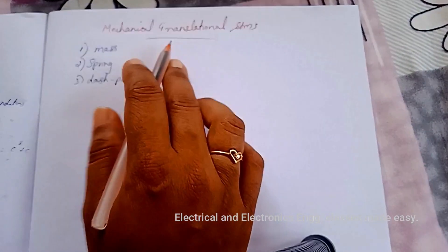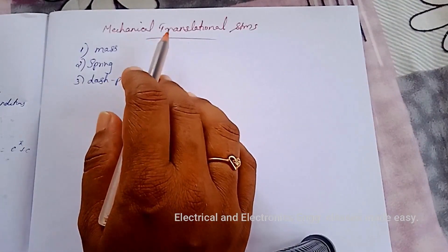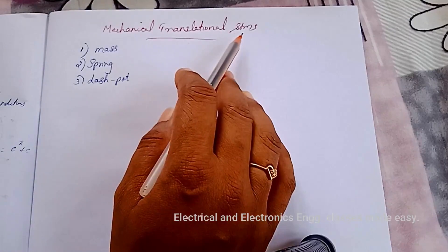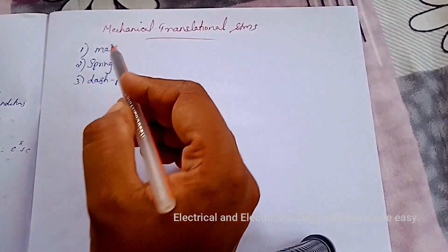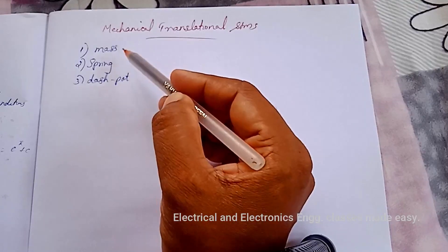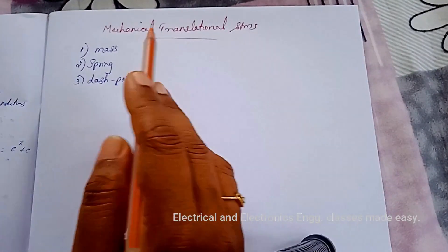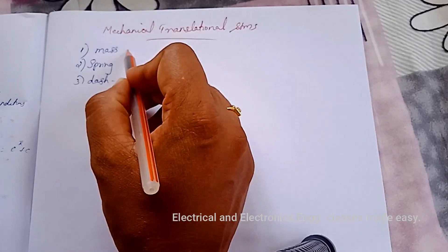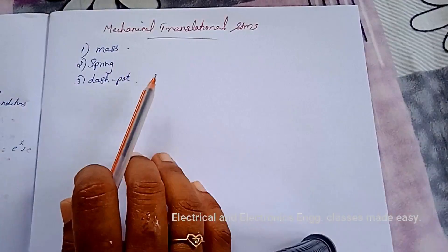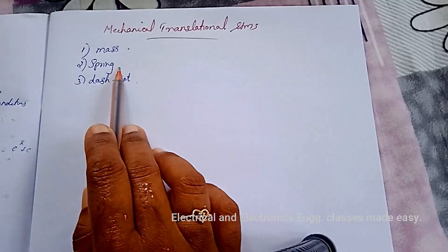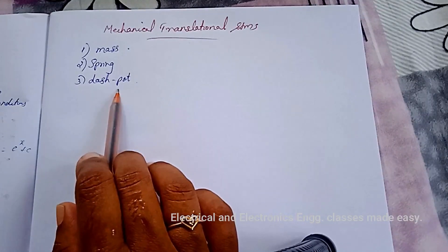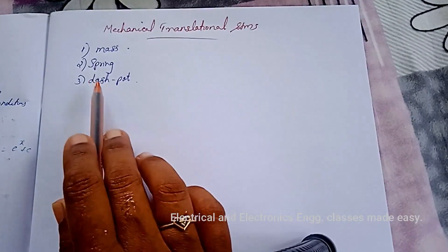Welcome to today's class about mechanical translational systems. The model of mechanical translational systems can be obtained by using three basic elements: mass, spring, and dashpot. The weight of the mechanical system is represented by the element mass, assumed to be concentrated at the center of the body. The elastic deformation of the body can be represented by a spring, and the friction existing in the mechanical system can be represented by the dashpot.